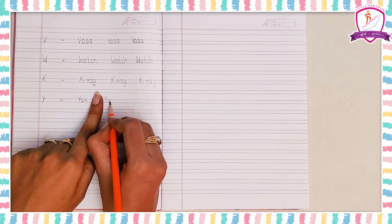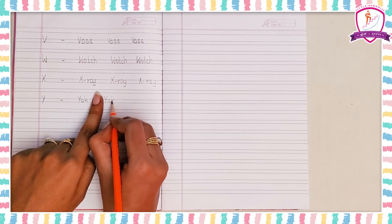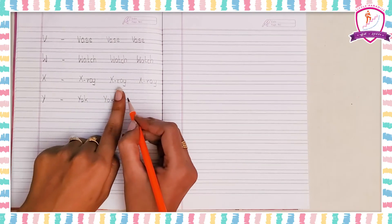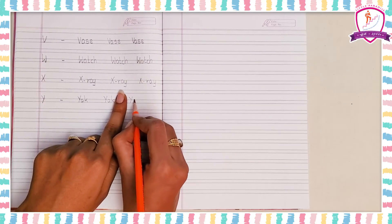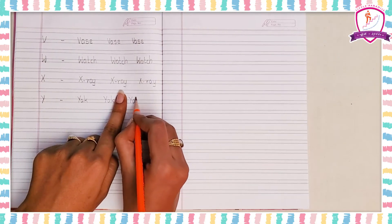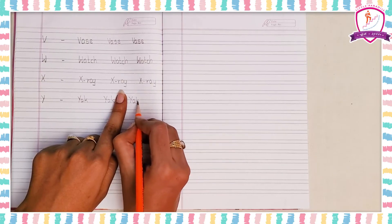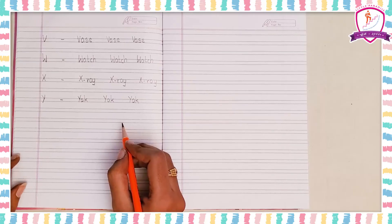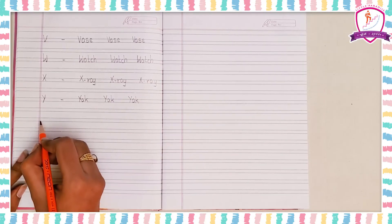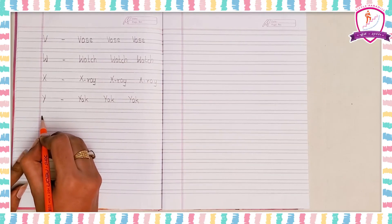Y for yak. Finger gap — Y for yak. Y, A, K — yak. Finger gap Y, A, K — yak. Again, finger gap Y, A, K — yak. Y after Z.